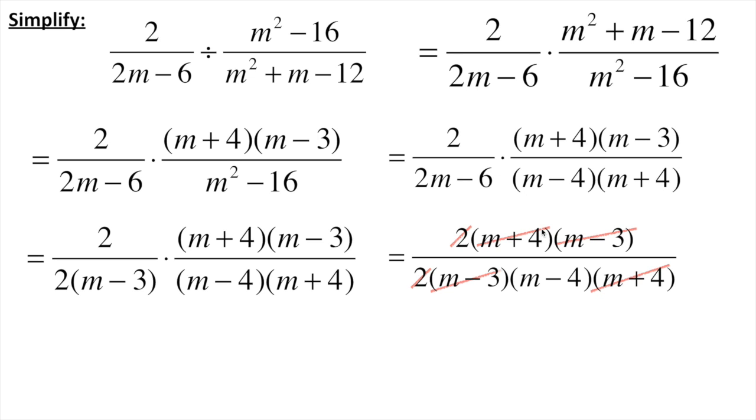And then of course I've got an m minus 3 on top and bottom. So basically I've reduced everything except for this m minus 4. I've got an m minus 4 on bottom.